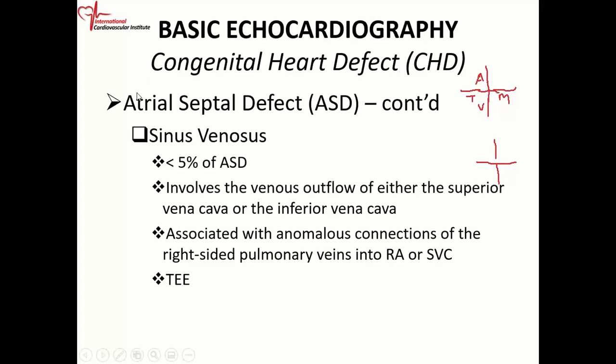So with your sinus venosus defect, if it is identified, look for anomalous pulmonary venous drainage — it might be draining into the right atrium, superior vena cava, or inferior vena cava.